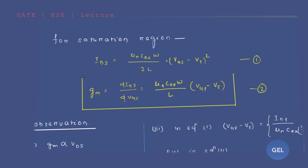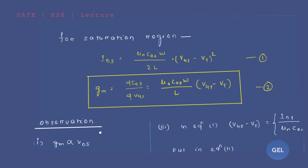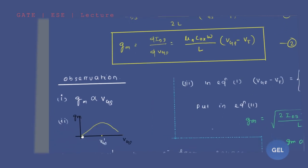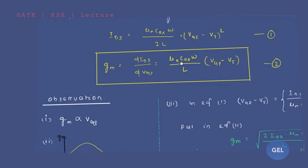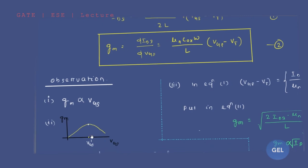Important observations: First, transconductance is directly proportional to input voltage VGS. So if you increase the input voltage, the transconductance value also increases — it follows a linear behavior. But after a certain value of VGS — let's call it VGS' — when VGS is greater than VGS', the GM value decreases.